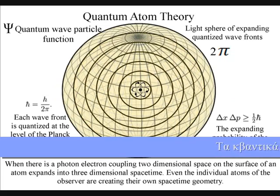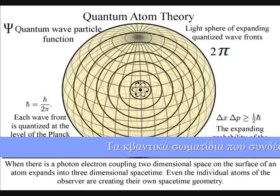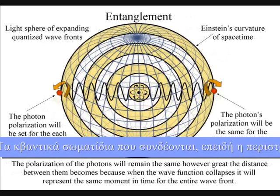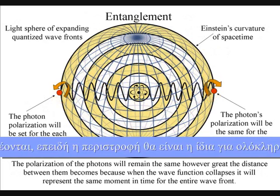The polarization of the light will be the same for the entire surface of the light sphere, creating quantum entanglement and the symmetry and geometry of spacetime.